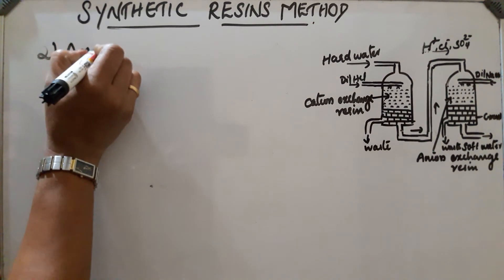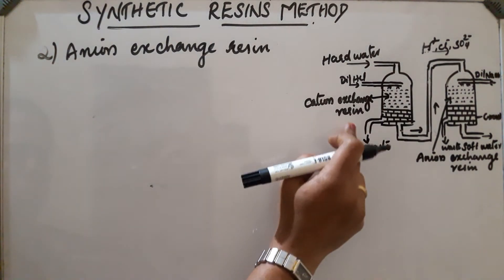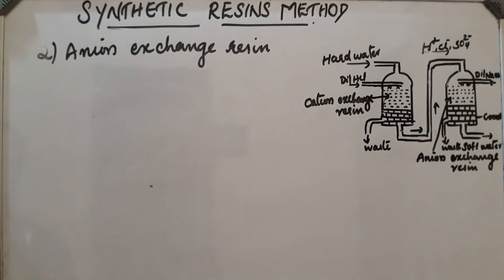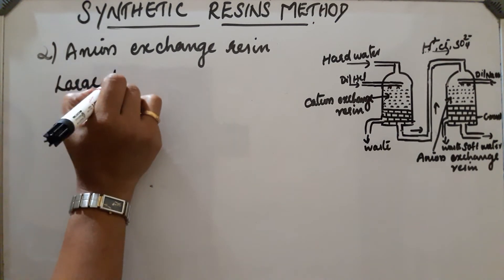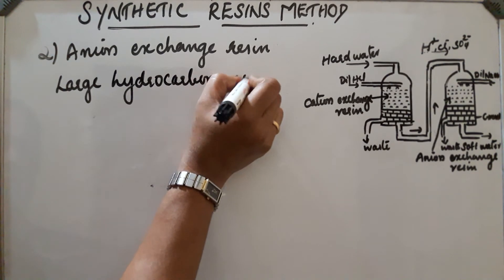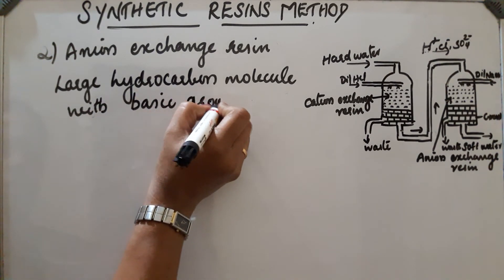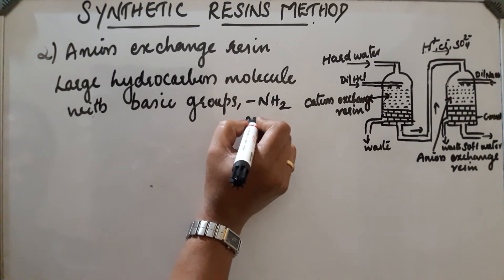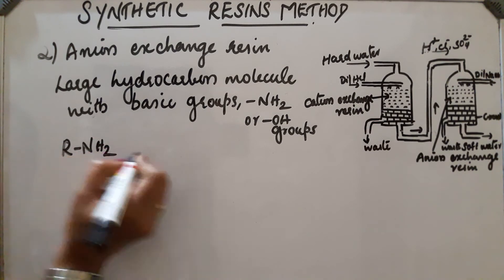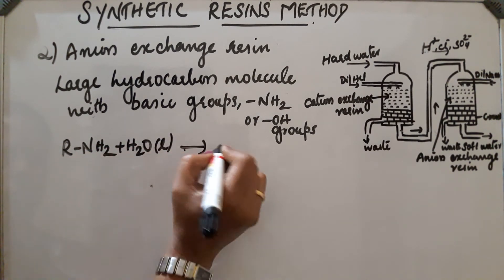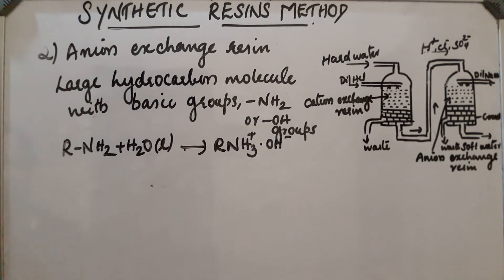The second type is the anion exchange resin. Hard water, after the removal of cations, is passed through this anion exchange resin. This resin contains a large or giant hydrocarbon molecule with reactive basic groups, such as NH2 or OH groups. The resin undergoes hydrolysis: R–NH2 + H2O gets converted into R–NH3+ and OH−.